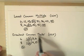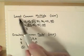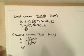Again, the key in greatest common factor: make sure you're listing factors. And in least common multiple, make sure that you're listing multiples.